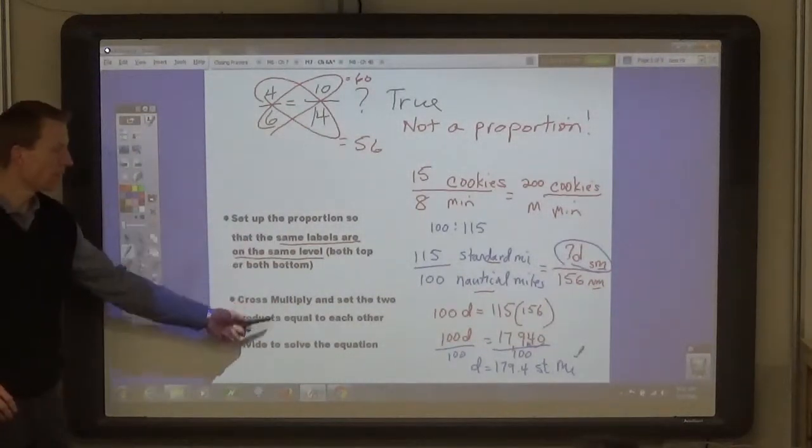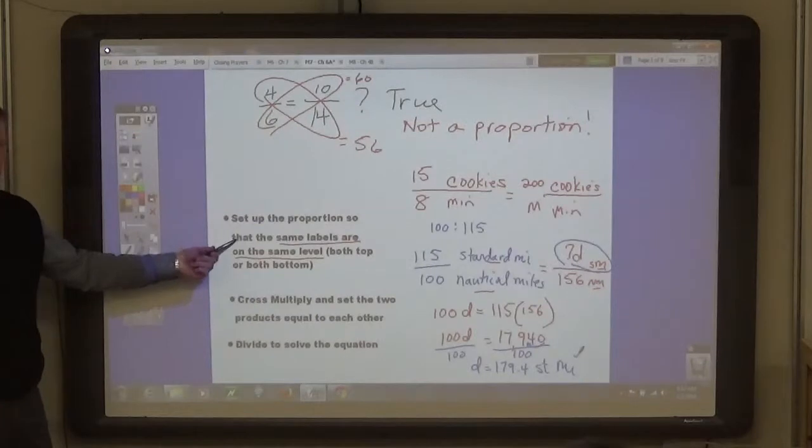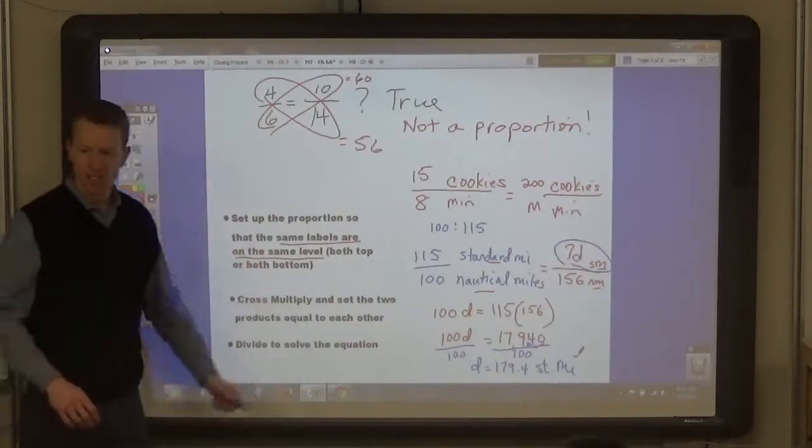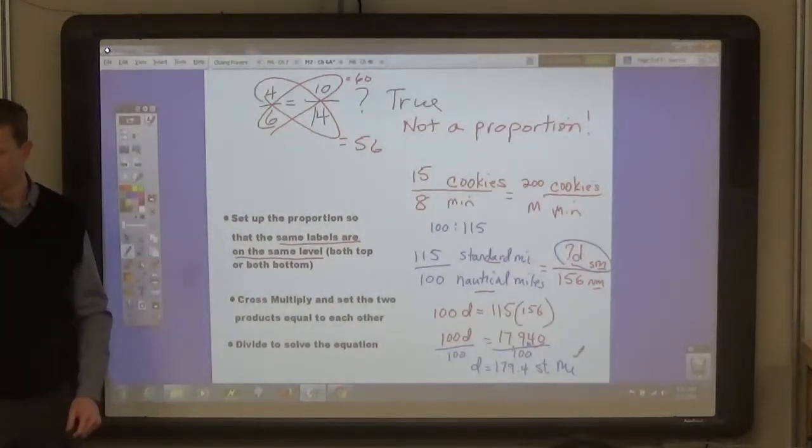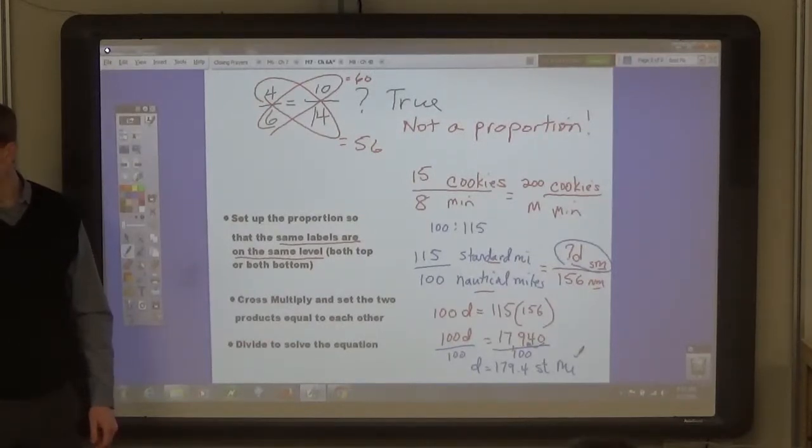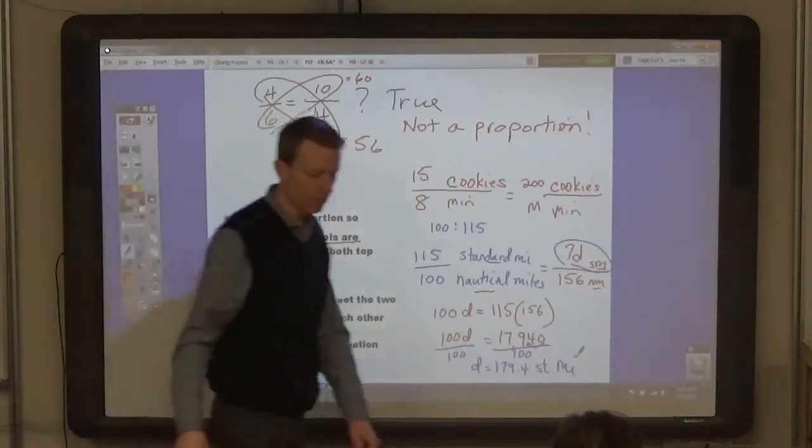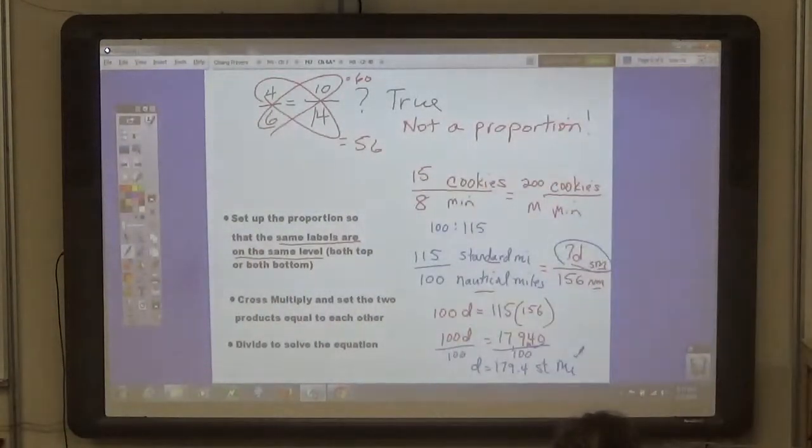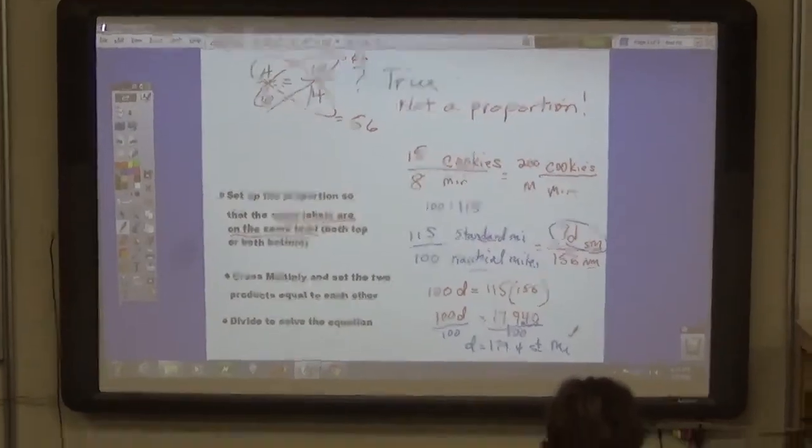Any questions about this process? What is the key? Right. Make sure the same labels are on the same level. So your assignment. I want you to do 2 to 20 evens, and then 21, 22, and 23. 2 to 20 evens, 21, 22, and 23.